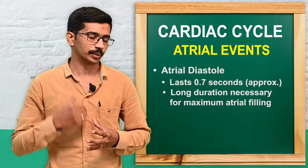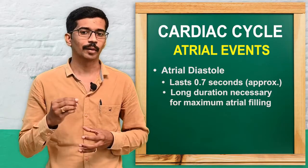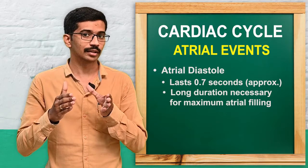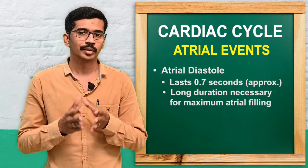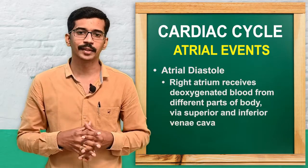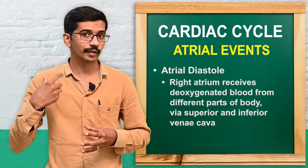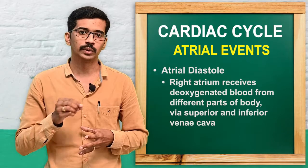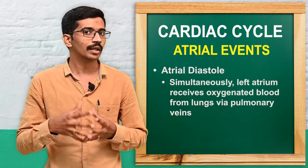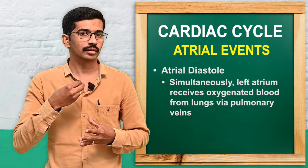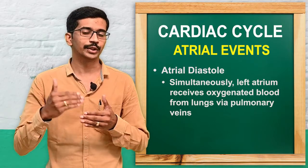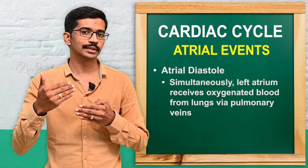Coming to atrial diastole: it is approximately 0.7 seconds, and this duration is lengthier because maximum atrial filling takes place during this stage. In the right atrium, deoxygenated blood from different parts of the body comes through the superior and inferior vena cava, and simultaneously in the left atrium, oxygenated blood is carried from the lungs through the pulmonary vein. These are the events taking place in the atrial diastole.